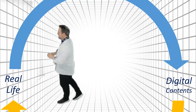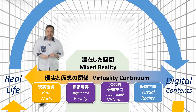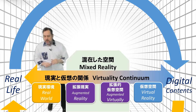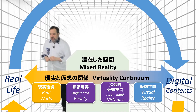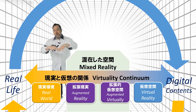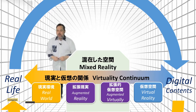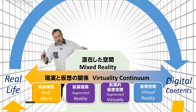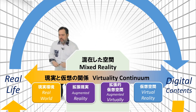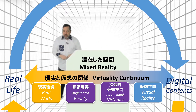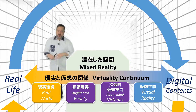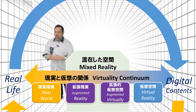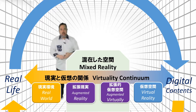This continuum was originally introduced by a couple of researchers, Milgram and Kashino, in a research paper, and has helped start to define these terms. You can think of it like a spectrum — a rainbow of realities. A lot of researchers, when we think about all these things, we think about them in a plurality. These are realities that we're living in now, not just one.